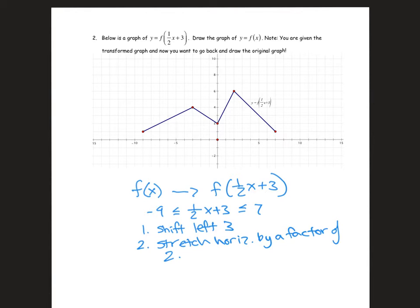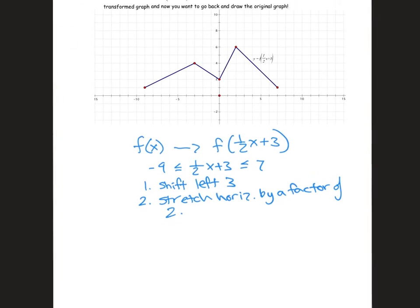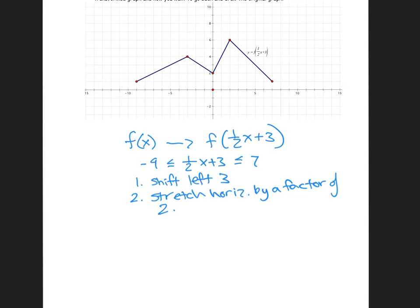But remember I've given you the transformed graph, so now to go backwards we're going to undo what we did. To go from f of one half x plus three back to f of x, I have to undo what I just did. That means I'm going to start at the last thing I did and do the opposite. If the last thing I did was stretch horizontally by a factor of two, that means the first thing I'll do to go back to the original graph is shrink by a factor of two.